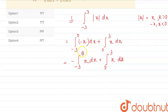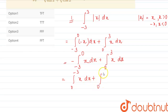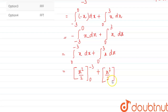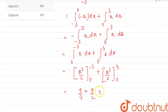Since we have a minus outside, we can interchange the limits, giving ∫₀^(−3) x dx + ∫₀³ x dx. Evaluating: [x²/2] from 0 to −3, plus [x²/2] from 0 to 3. This gives (−3)²/2 = 9/2, minus zero, plus 9/2, so 18/2 equals nine.